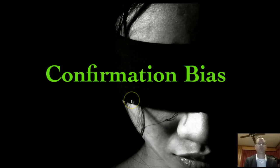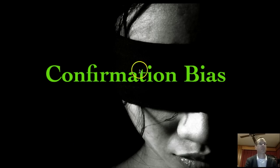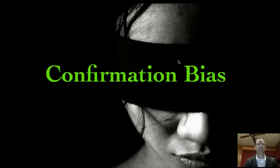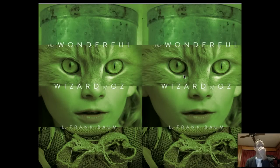Let's start with something called confirmation bias. This is the most important thing that we can start the course with. The book buries it at the end, but we really need to talk about it beforehand. Confirmation bias is a fancy way of saying that someone's wearing a blindfold. Essentially, they are seeing the world a certain way and seeing it incorrectly. A great analogy would be the Wizard of Oz.